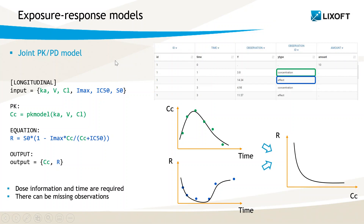In the case of the typical joint PKPD model, measurements of the PK concentration and PD response are included in the column Observation of the dataset and distinguished with the column Observation ID. The structural model should include a model for the PK concentration, called here CC, and a model for the PD response based on the exposure.